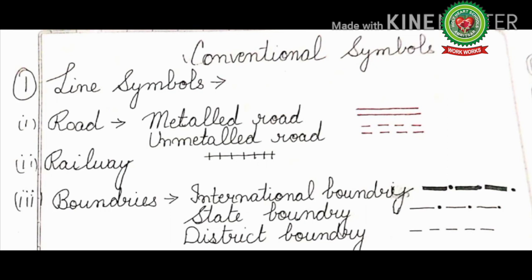Railway lines are depicted with black color. Next, boundaries are divided into three parts: number one — international boundary with its symbol, number two — state boundary with its symbol, and number three — district boundary with its symbol. On a map, we show these boundaries with black color.